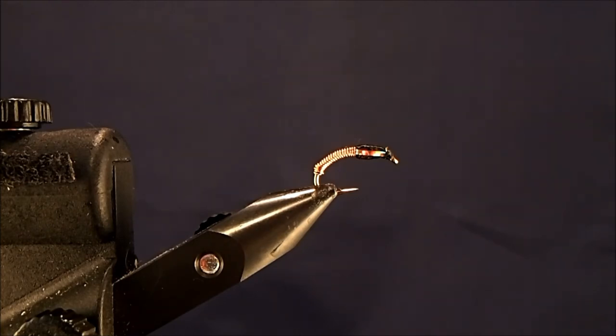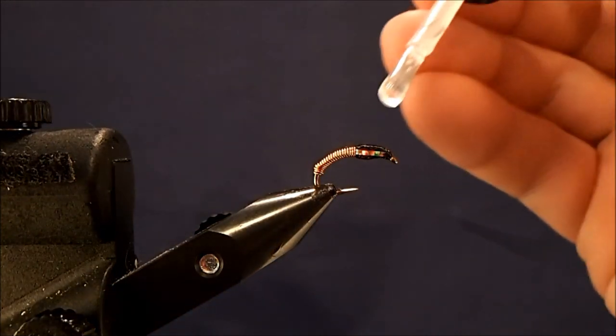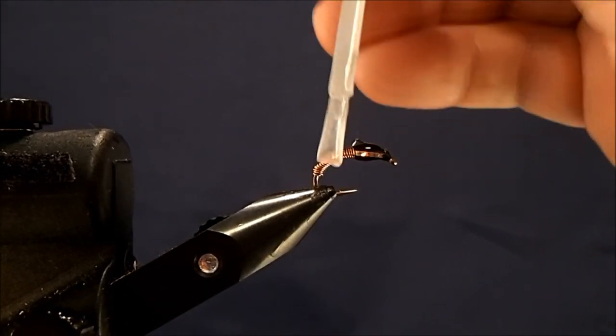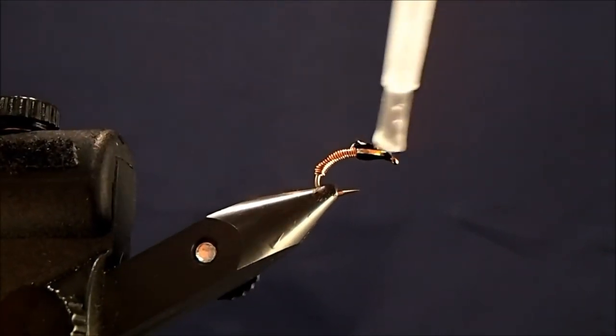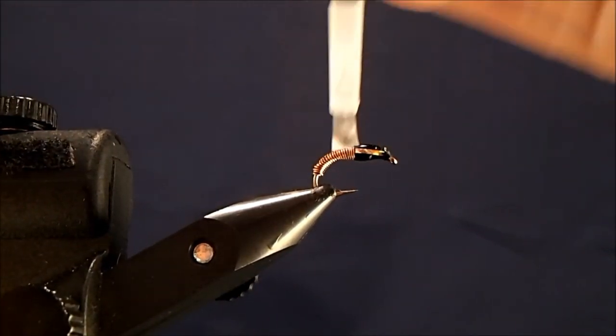The final step of the fly is just to coat it. I use Sally Hansen's Hard as Nails. I'm going to coat the entire fly with this just to give me that nice epoxied look.